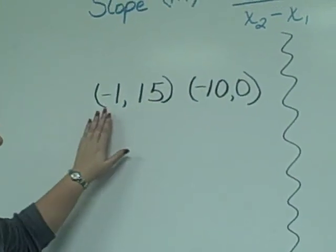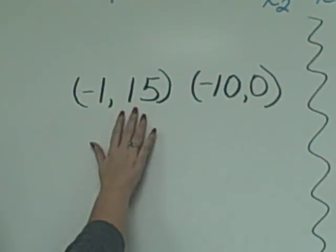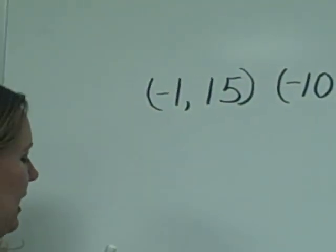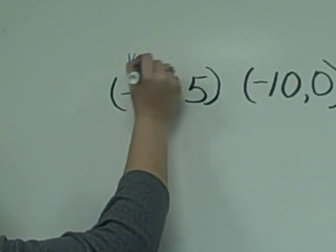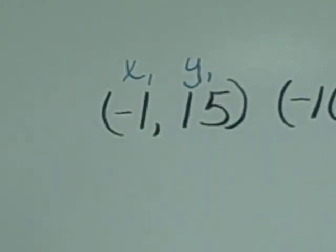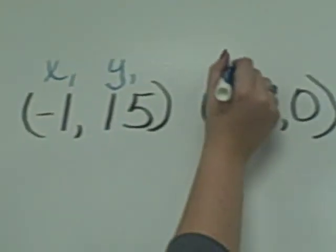In this case, we've got the point negative 1, 15, and negative 10, 0. This is the first point, so we're going to name this point, or this ordered pair, x1 and y1, where the ones actually stand for being the first point.